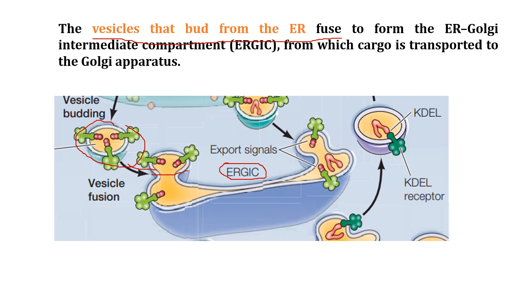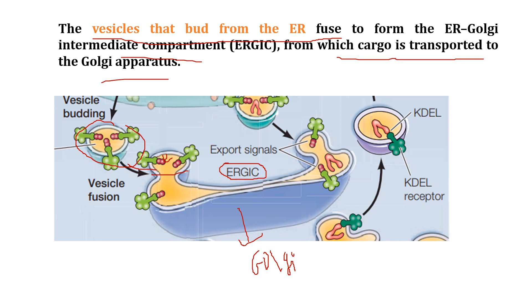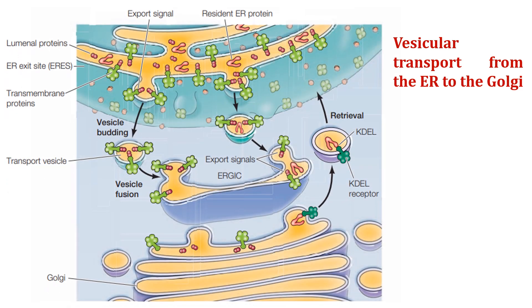From the ER-Golgi intermediate compartment, cargo — meaning luminal proteins and membrane proteins — is transferred to the Golgi apparatus. Membrane proteins and lipids are transported similarly along this pathway.